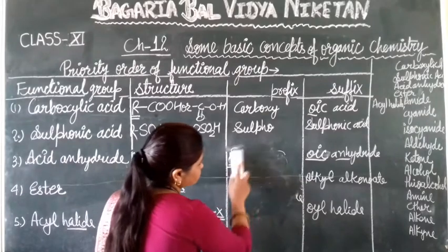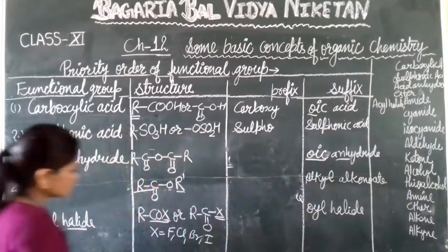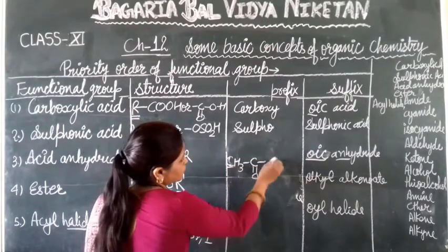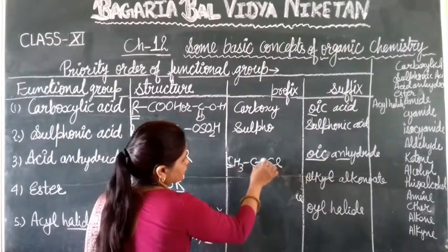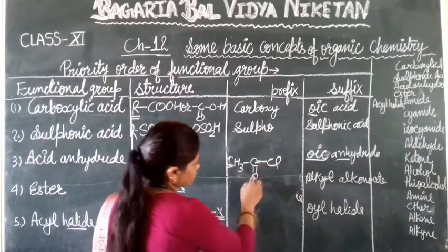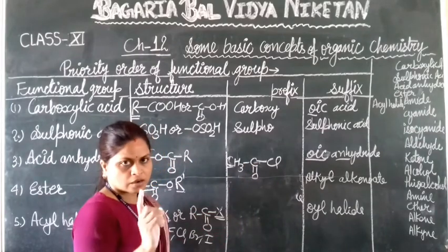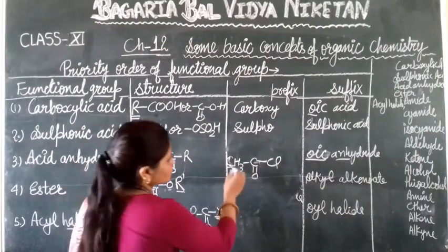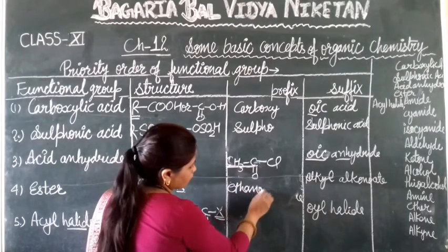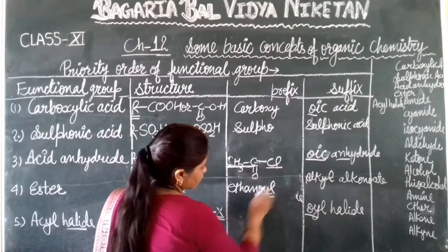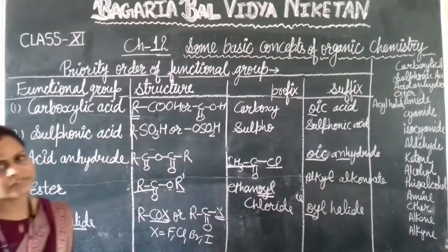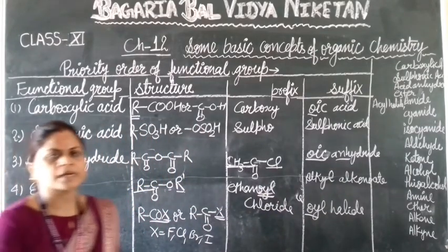Next, let's look at an acyl halide example. For CH₃-CO-Cl — this is an acyl halide. There are two carbons, so it is 'ethan-oyl', and the halogen is chlorine, so the name is 'ethanoyl chloride'. We use this suffix. We will continue discussing these in the next video.